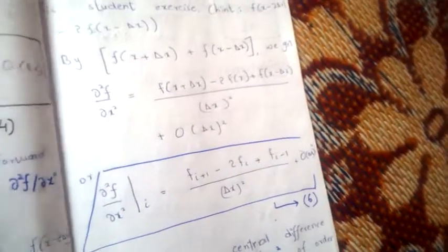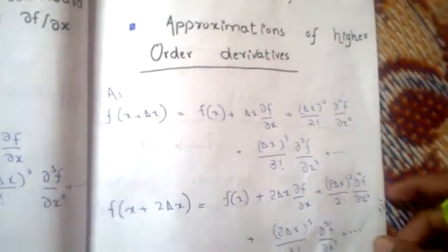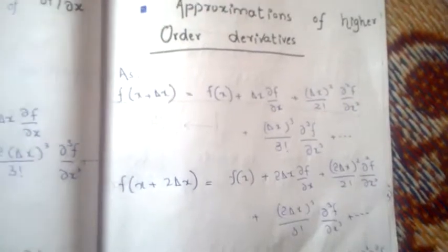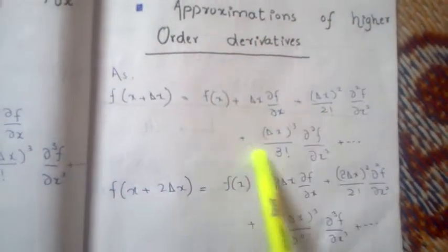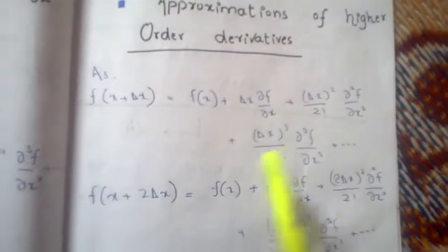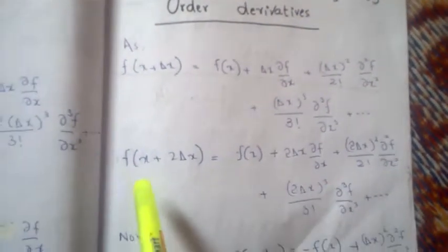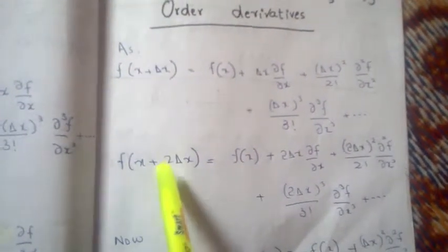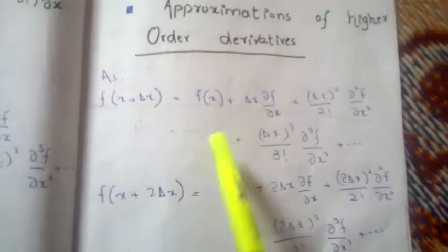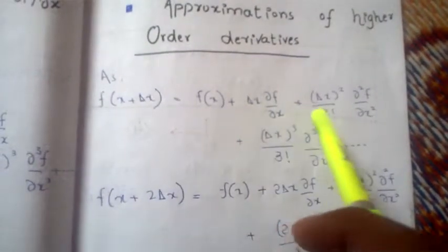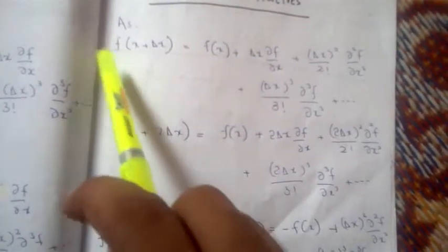First, you must be familiar with the Taylor series — I will assume the viewer is familiar with it. The Taylor series about point x is given by a standard expression. Using this expression, you need to find f(x + 2Δx), which can be found by replacing Δx with 2Δx throughout, so all occurrences of Δx are replaced by 2Δx.